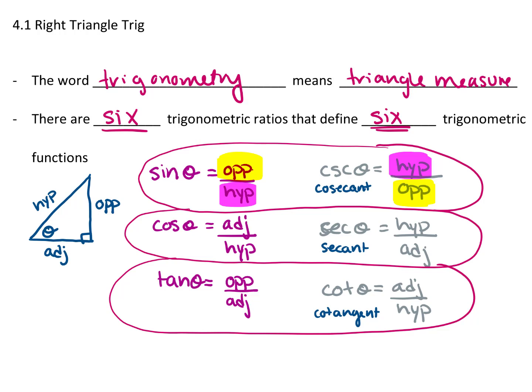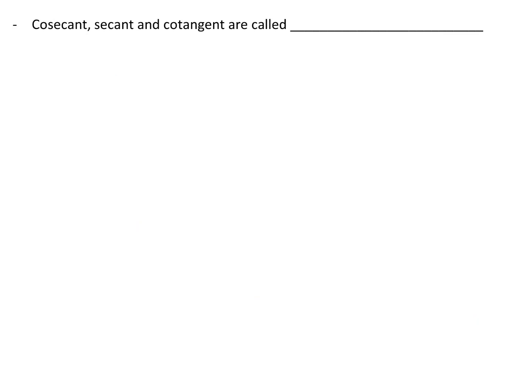I just wrote in blue the long form of all the reciprocal functions, just so you know exactly how to pronounce the abbreviated form. So cosecant, secant, and cotangent are called reciprocal functions.